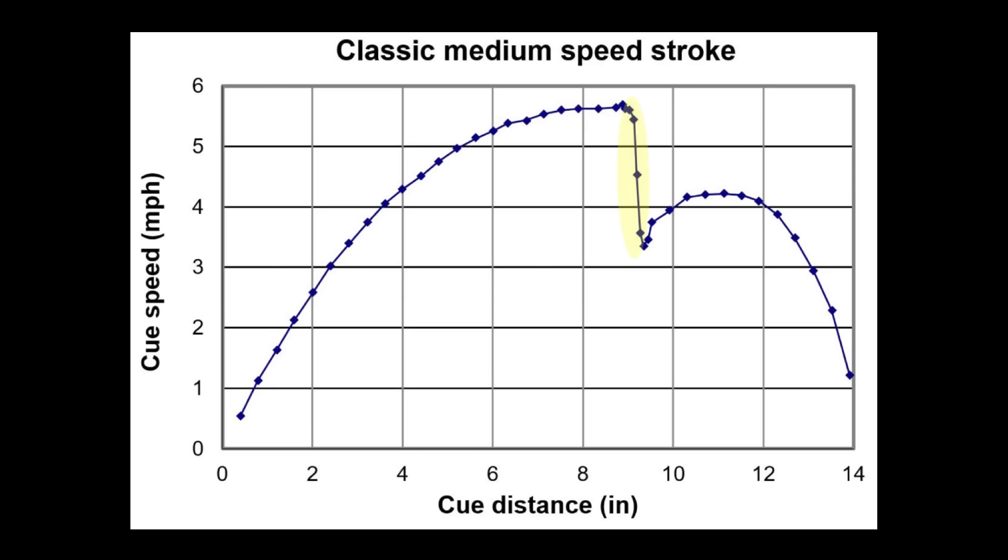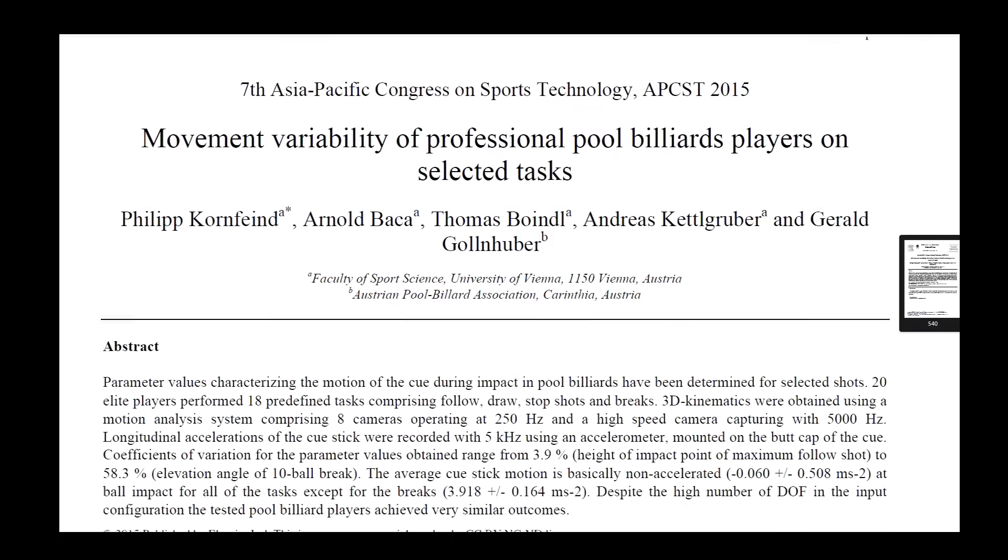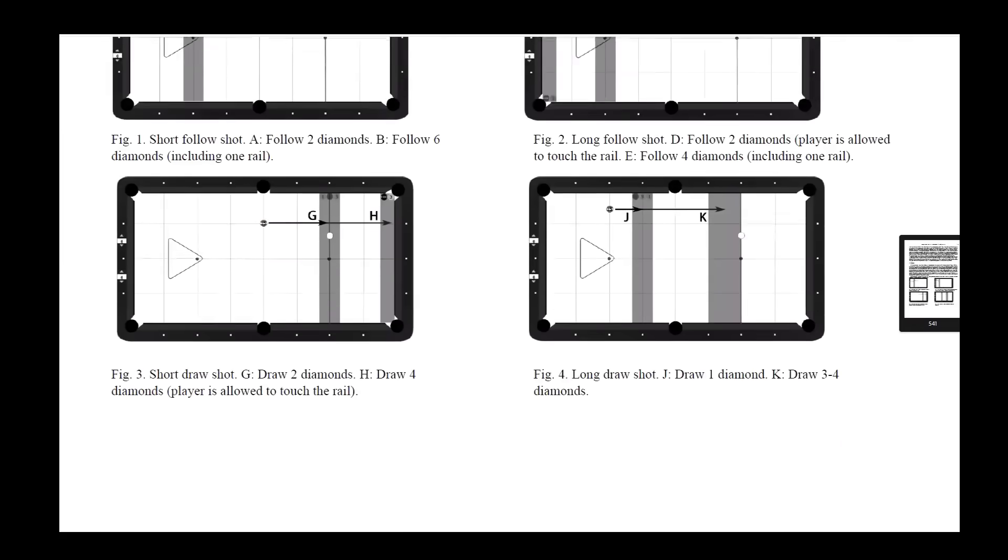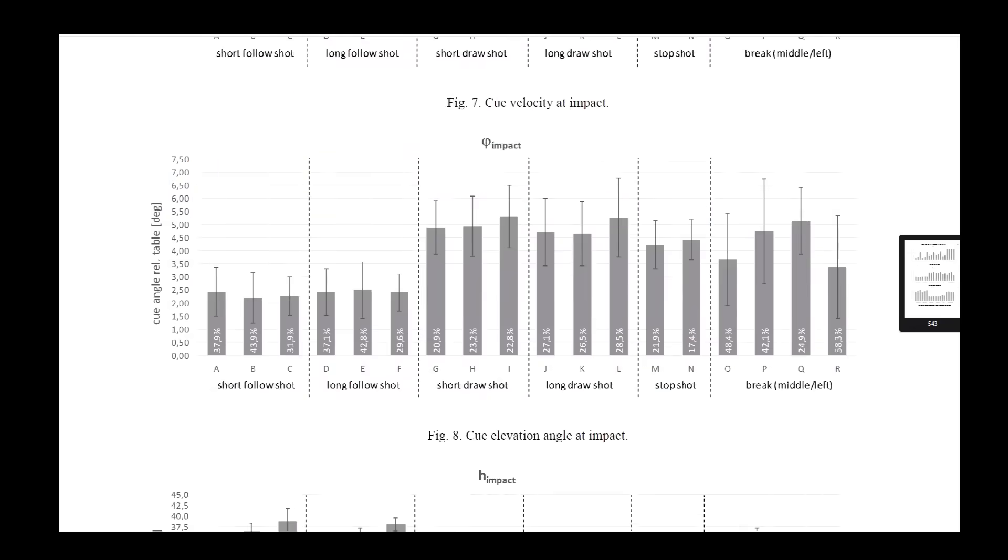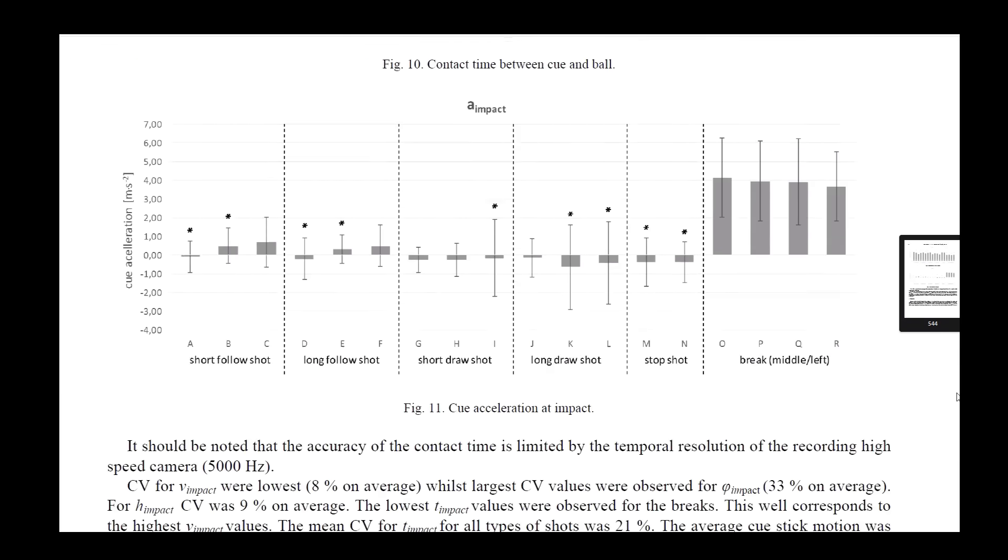During the incredibly brief tip contact time, the cue loses significant speed. Then the momentum of the grip hand and arm cause the cue to speed up some after the hit. Then the cue decelerates to a stop during the remainder of the follow-through. A European study involving 20 top players also showed that most elite pool players reach maximum cue speed just before cue tip contact.